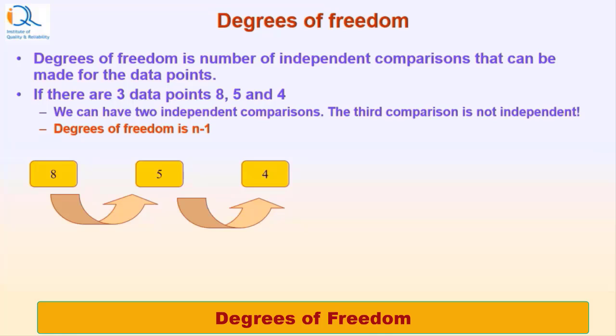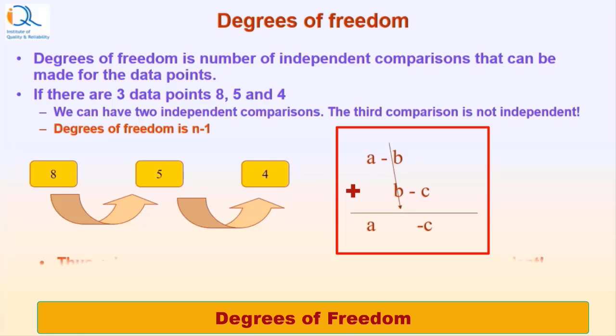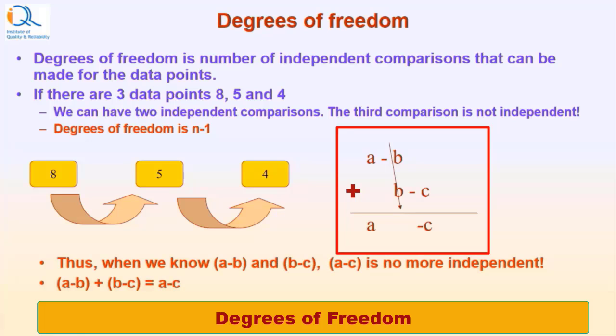In general, let us say that we have three numbers a, b and c. The first comparison between a and b will be a minus b. The comparison between b and c will be b minus c. Now, if we add the two comparisons, b gets cancelled and we automatically get the third comparison a minus c, which obviously is not independent. Therefore, the degrees of freedom for the three numbers a, b and c would be 2. Thus, when we know a minus b and b minus c, a minus c is no more independent as b gets cancelled.